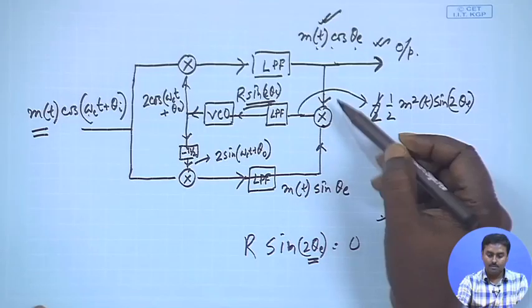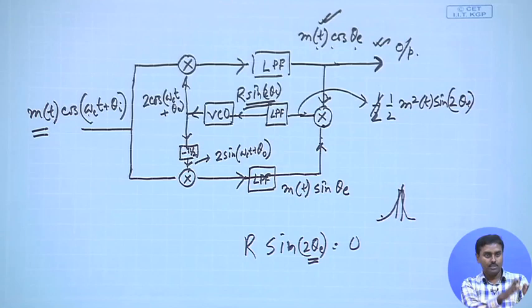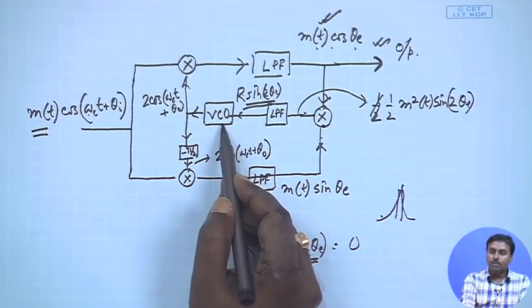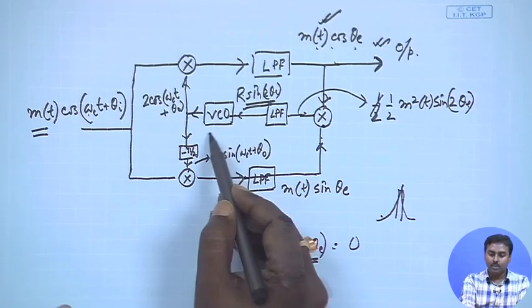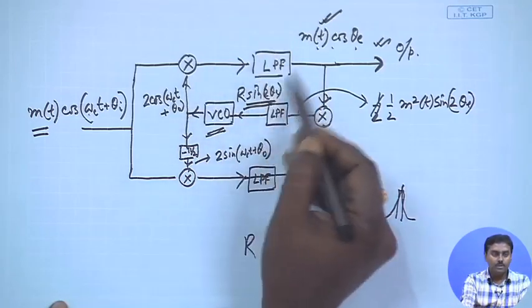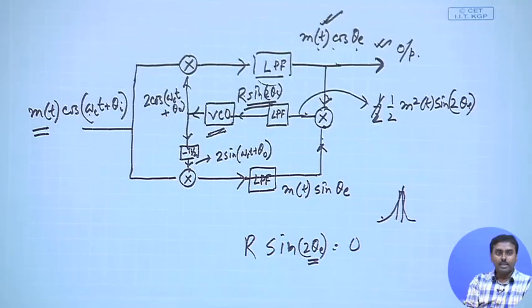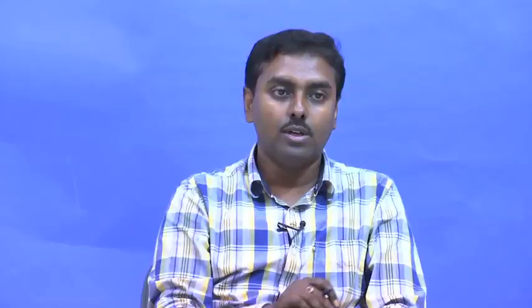Once phase locking happens, the output m(t)·cos(θe) with θe equal to zero gives cos(0) = 1, so we get m(t) back. That is the beauty of the Costas loop - it does the m²(t) squaring, incorporates the PLL circuitry with VCO and loop filter, and simultaneously produces the demodulated output m(t) whenever locking occurs.